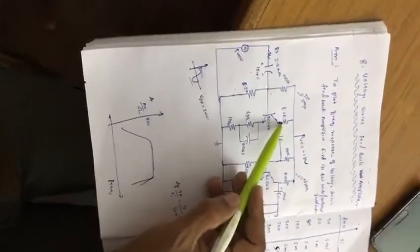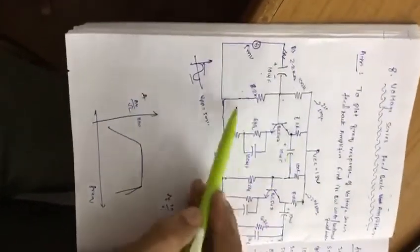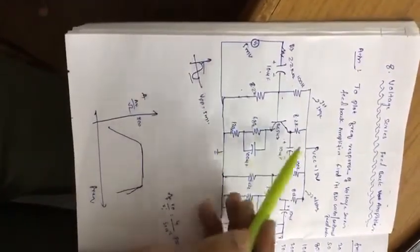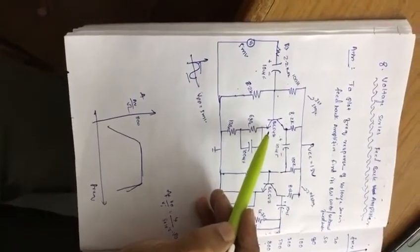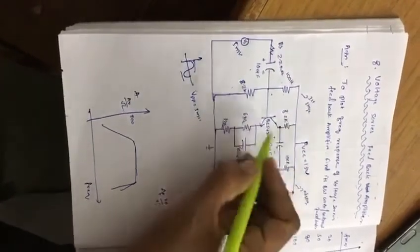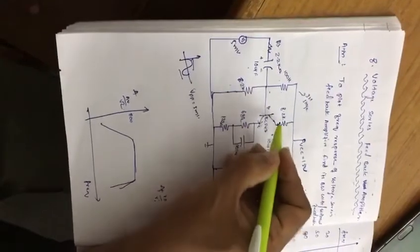R1, R2, RC and RE - this is self-biased circuit of your first stage. BC547 transistor which you are going to use, BJT, with emitter, base, and collector.